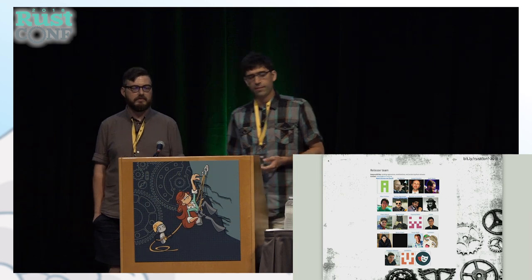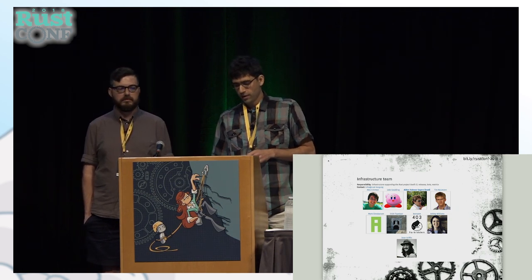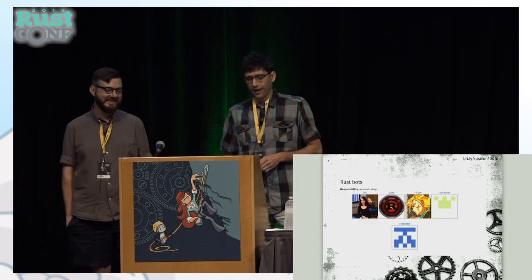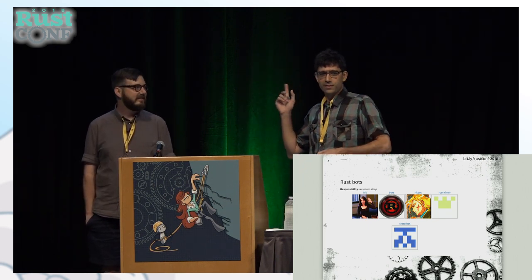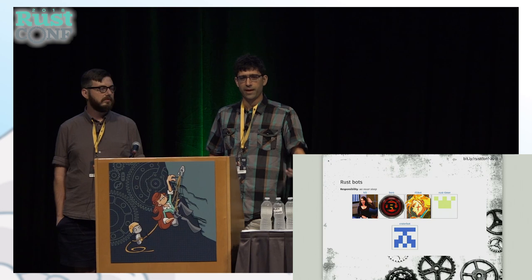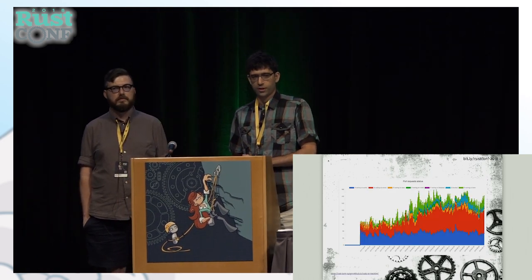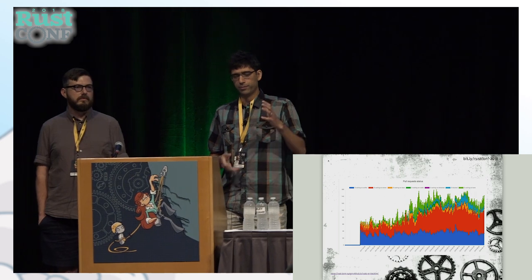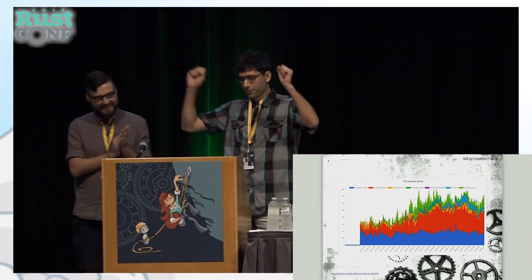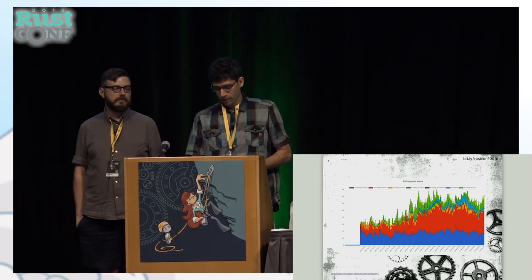Now we have a team that manages the release process, led by Marc Simulacrum. We have a separate team managing the infrastructure, led by Aiden Hobson Sayers. And in addition, we have an ever-growing team of bots. Where did the bots come from? They came from those two teams — because now that we have actual teams managing this process, they have enough time to automate the processes and make them better, rather than always just barely getting everything done. You can see this in the pull request graph — we're fielding twice as many pull requests as before.